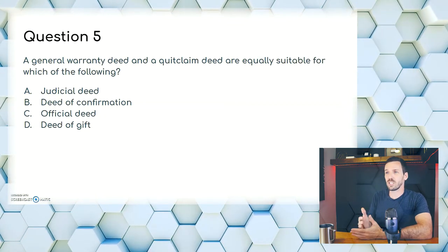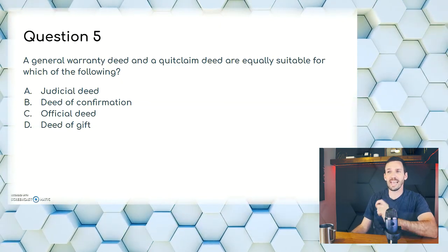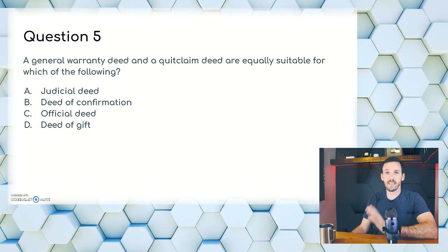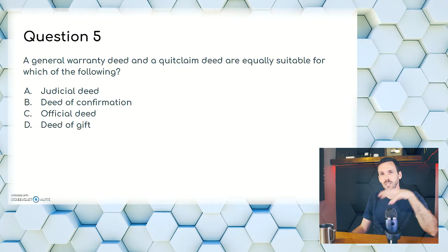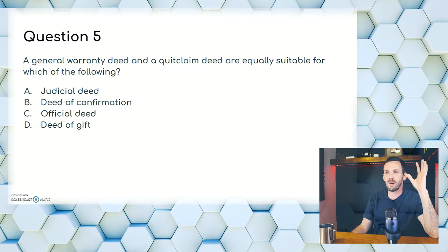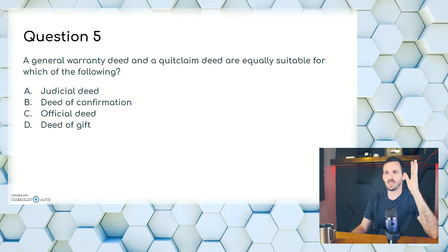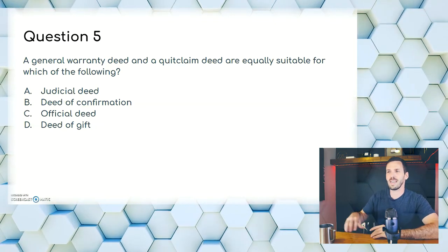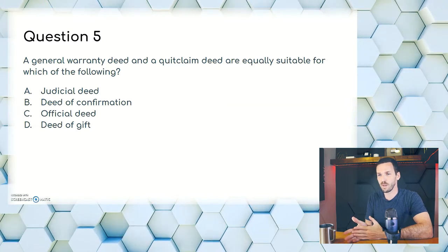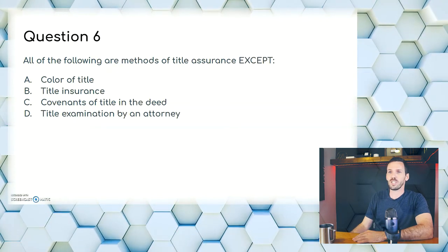Question five: a general warranty deed and a quit claim deed are equally suitable for which of the following? A, judicial deed; B, deed of confirmation; C, official deed; or D, deed of gift. Judicial is around foreclosures; deed of confirmation isn't well covered. Option C is a bit of a trick. The deed of gift is the more correct answer here. The answer is D.